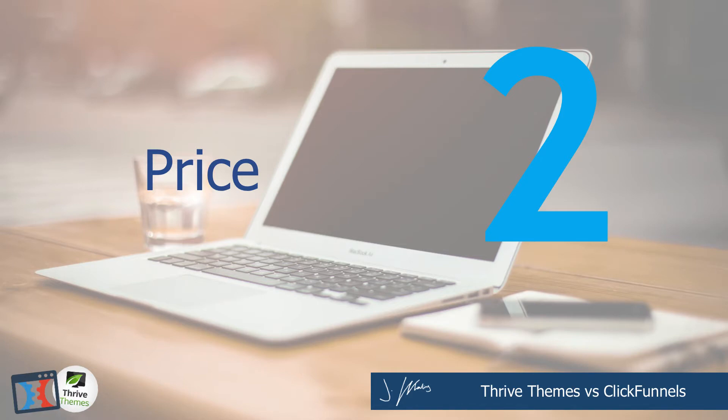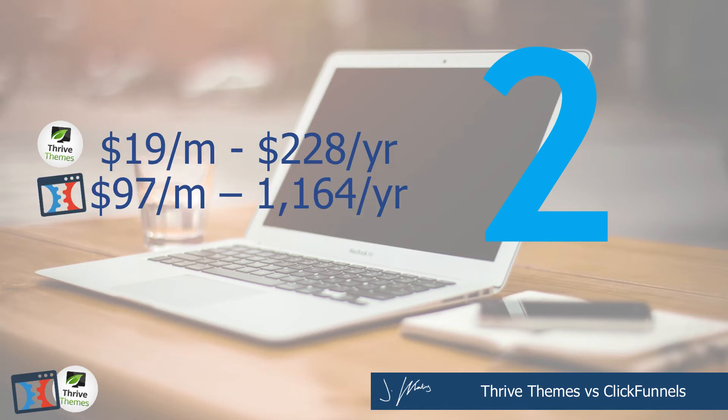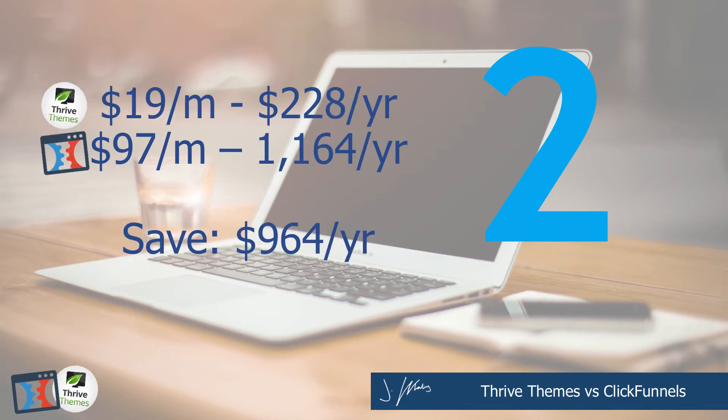Reason number two Thrive Themes is better than ClickFunnels comes down to price. There's a huge difference: Thrive Themes is $19 a month or $228 a year, while ClickFunnels is $97 a month or $1,164 a year. That's about $984 extra dollars you can spend on hiring a WordPress developer, driving traffic, or anything else you need to build your business. You're not sacrificing features, and you have an extra $964 to spend on other things.